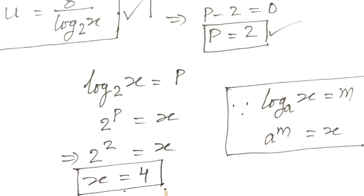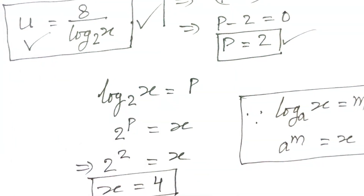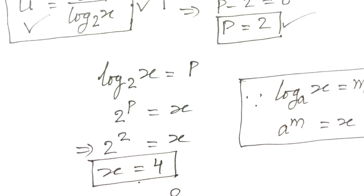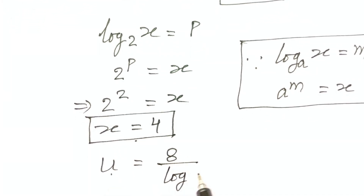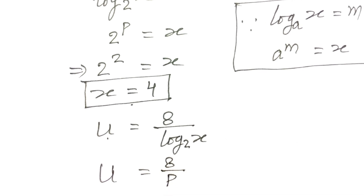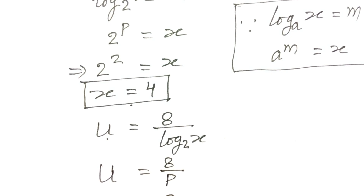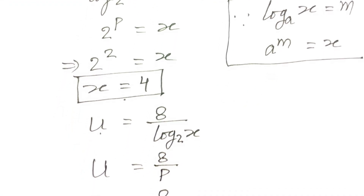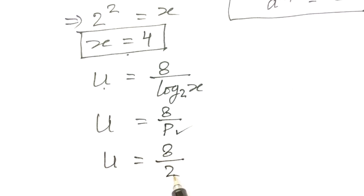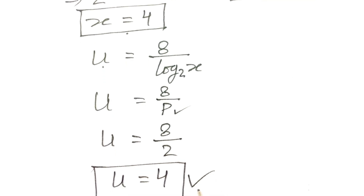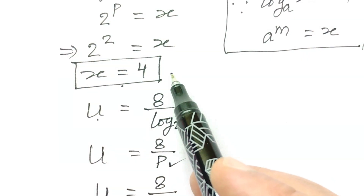So x is equal to 4. Now we need the value of u. Since u equals 8 over log of x base 2, that is u equals 8 over p, and p equals 2, so u is equal to 8 over 2, which gives u equal to 4.